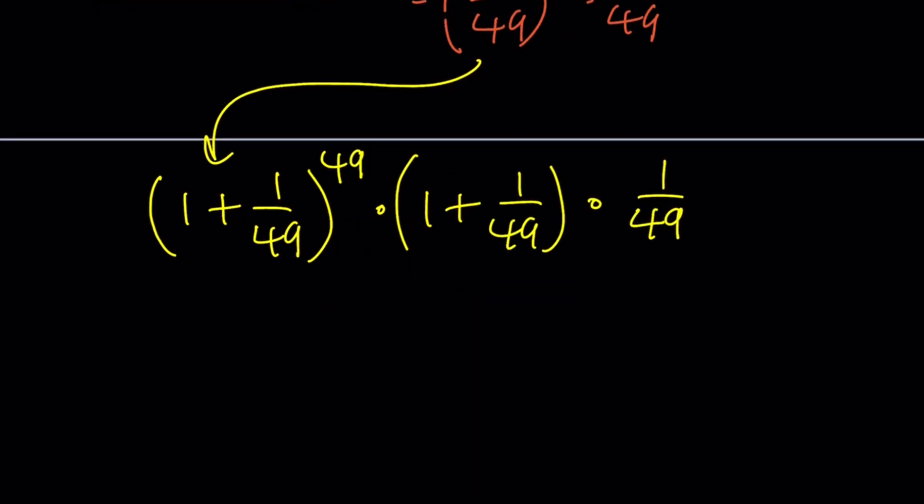The first part should be familiar because it looks like 1 plus 1 over n to the power n. If you simplify this, you get 1 plus 1 over 49 to the power 49, multiplied by 50 over 49 times 1 over 49.